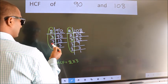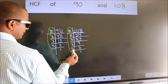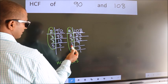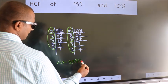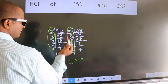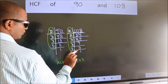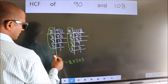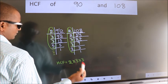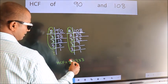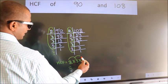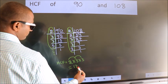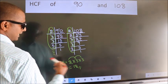Next number 5. Do we have 5 here? No. No more numbers have been left out. So, our HCF is 2 into 3, 6 into 3, 18 is our HCF.